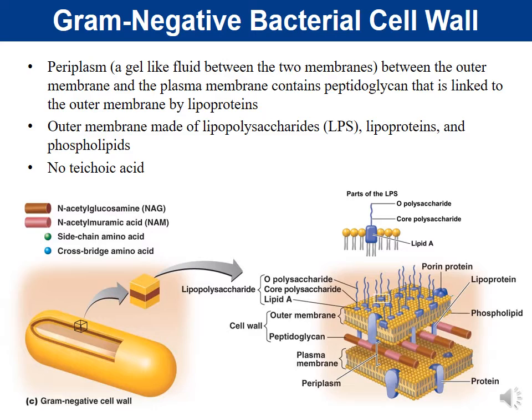Gram-negative bacteria have a very thin layer of peptidoglycan but have an outer membrane. They don't have teichoic acids because they have a thin layer of peptidoglycan. The space between the two membranes is called the periplasmic space — between the outer membrane and the inner membrane — and in gram-negatives, the peptidoglycan is located there.